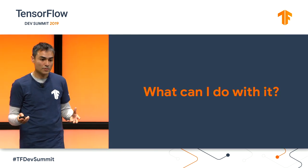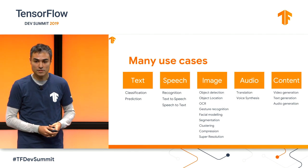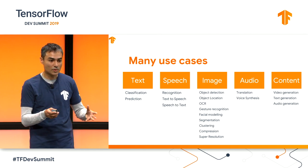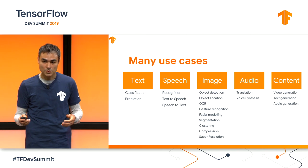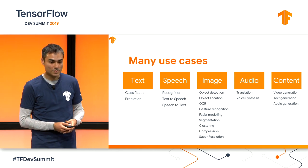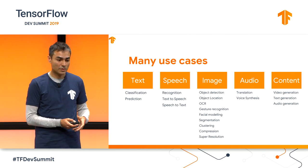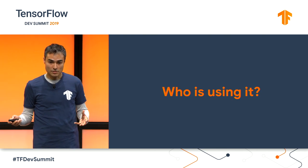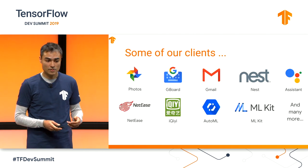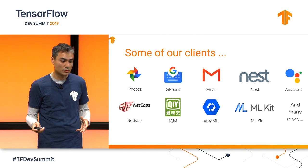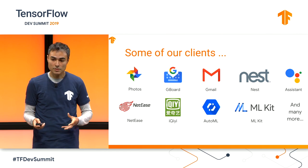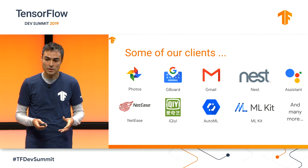So what can you do with TensorFlow Lite right now? You can do a lot of things. These are different tasks that are supported already: text, speech, image processing, audio processing, and a lot of content generation. TensorFlow Lite is currently deployed in over 2 billion devices in production. This includes not only Google properties — some of which are really core to Google, like the Assistant and Google Photos — but also from other companies and frameworks like AutoML and ML Kit.